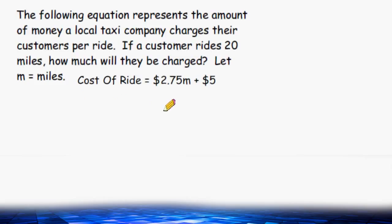It is given in the problem that the customer rides 20 miles. So what we have to do is substitute a value of 20 in for the variable m. We can rewrite this equation as $2.75 multiplied by 20 plus 5.